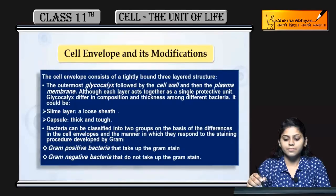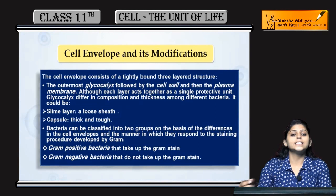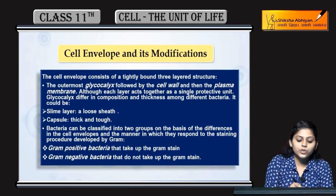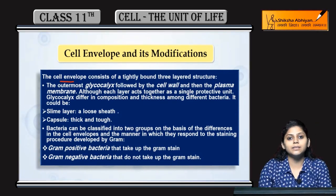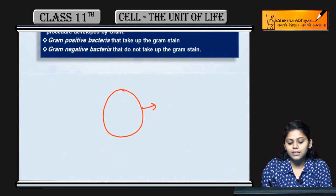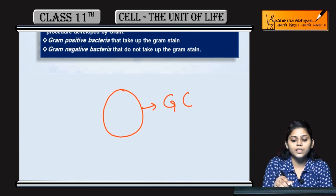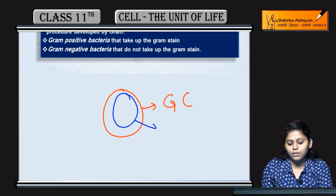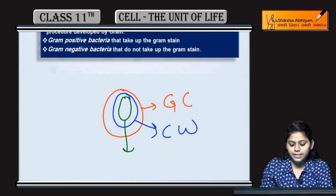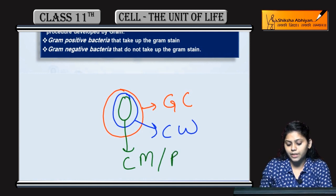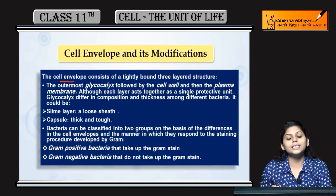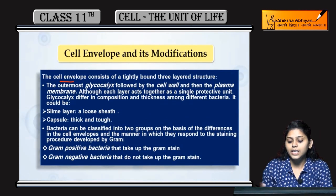Now we will study cell envelope and its modifications. In prokaryotes, the cell is enveloped in three layers: the outermost layer is glycocalyx, inside that is the cell wall, and inside that is the cell membrane or plasma membrane. These layers protect the cell from the environment or surrounding units.